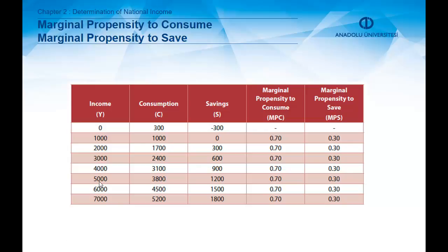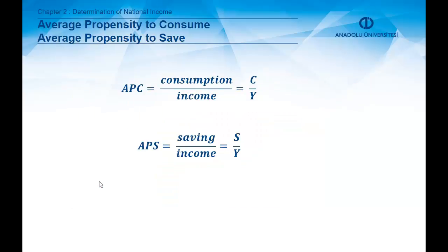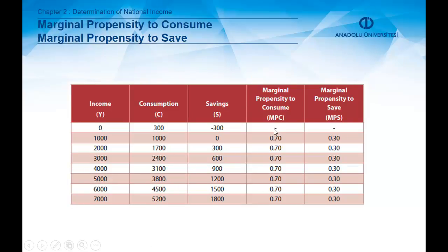The most important terms here are marginal propensity to consume (MPC) and marginal propensity to save (MPS). MPC shows how much consumption will change when there is a change in income. Specifically, MPC equals the change in consumption divided by the change in income, and MPS equals the change in saving divided by the change in income.